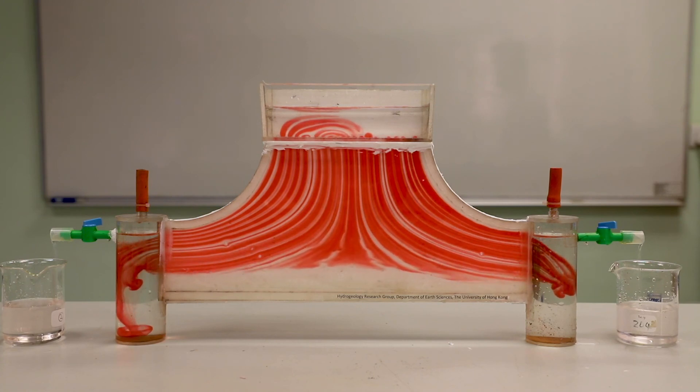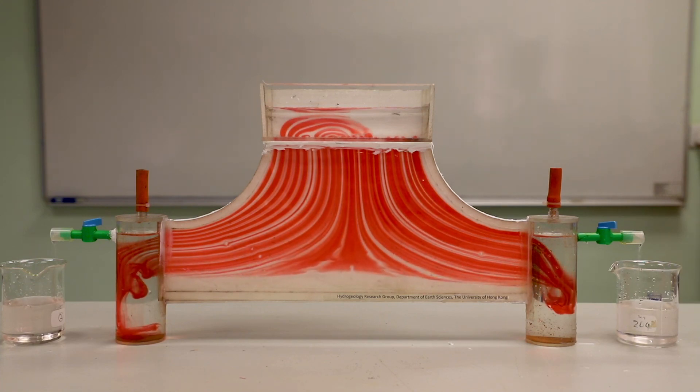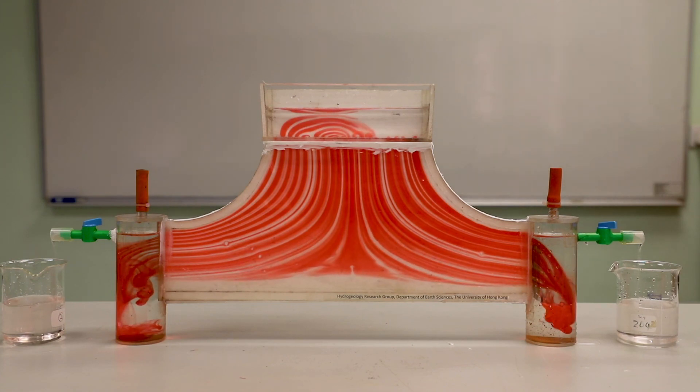Although the head difference is the same for each flow path, the velocity of flow is higher along the shallow flow path because the distance between the heads is shorter so the gradient is steeper.